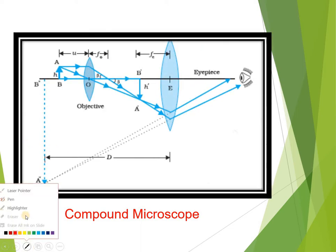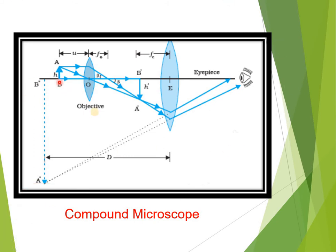In the compound microscope, the first lens facing the object is the objective lens and the second lens through which we see the object is the eyepiece lens. The working is: the first lens produces a magnified image which acts as an object for the second lens, and the second lens magnifies it further. In this way the combination produces greater magnification. This can be explained through the ray diagram.